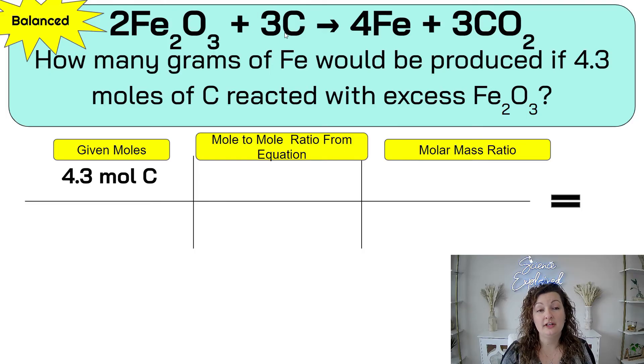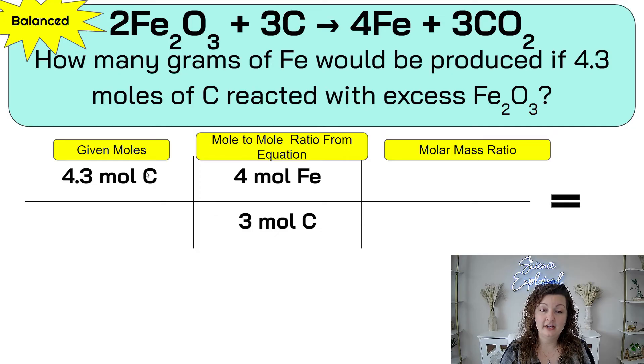Well, what are we wanting to turn it into? Grams of iron, Fe. So we're going to look up here at our equation for Fe, and we're just going to keep it a mole, right? We can't go directly from moles to grams of carbon to Fe. So we have to convert it to moles of Fe first. So this is going to be 4 moles of Fe, and then we can cancel out moles of carbon and moles of carbon. Perfect.